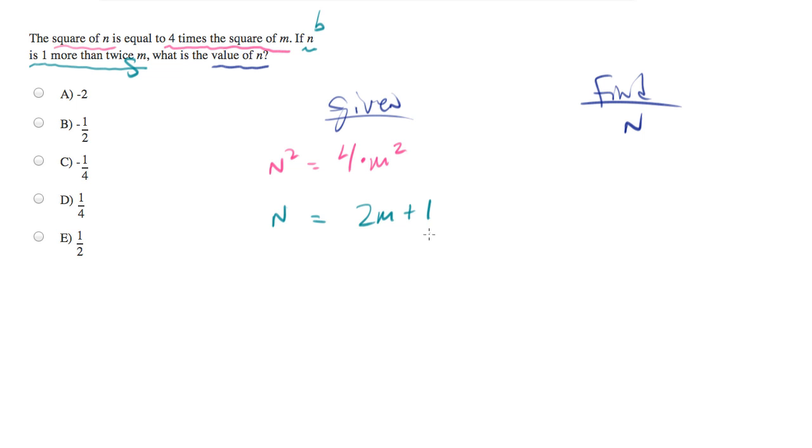We've been asked to find the value of n, and we need to find, if you look in the answers, we actually need to find the exact value. So let's solve one of these and plug into the other. We already have one solved for a variable. We have n is equal to 2m plus 1, so why don't we just plug that in?